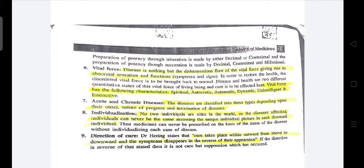Acute and chronic diseases: the diseases are classified into these types depending upon their onset, nature of progress, and termination of diseases. Diseases are divided into two parts — first by onset, second by nature of progress, and third by termination of diseases.